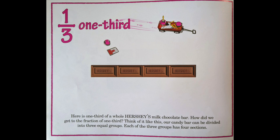One third. Here is one third of a whole Hershey's Milk Chocolate Bar. How did we get to the fraction of one third? Think of it like this: our candy bar can be divided into three equal groups, and each of the three groups has four sections.